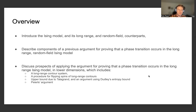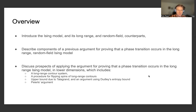We'll be discussing the prospects of applying the argument for proving that such a phase transition occurs. The components of the argument include defining a long-range contour system, a procedure for flipping the spins of long-range contours, making use of an upper bound due to Talagrand, an argument using Dudley's entropy bound and a majorizing measure theorem, as well as providing a statement of the Peierls argument.